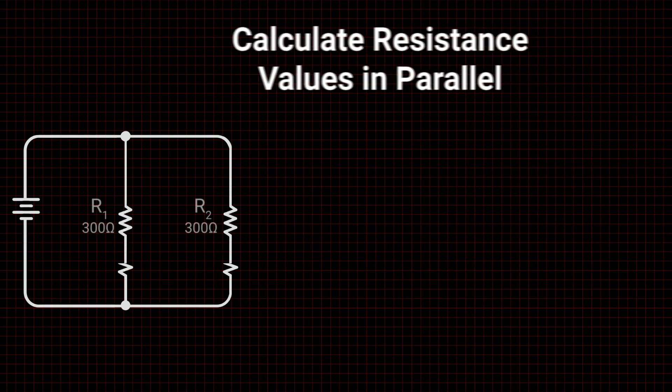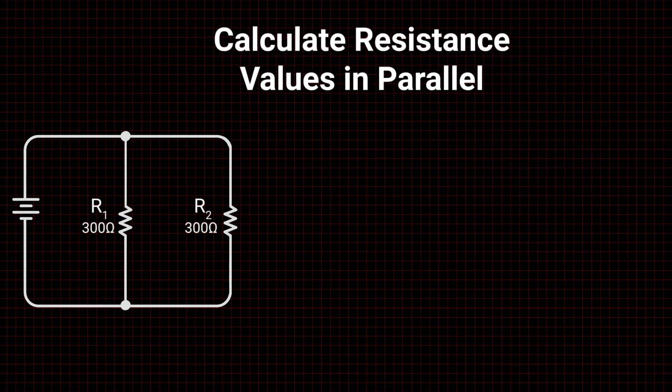When resistors are placed in parallel branches within a circuit, the calculation gets a bit more complicated. Total resistance is equal to the inverse of the sum of the inverses of the resistors.